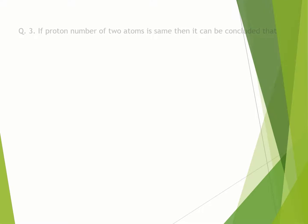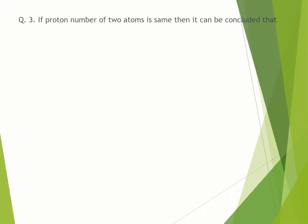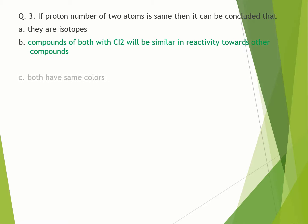Question number 3. If proton number of two atoms is same, then it can be concluded that: A. They are isotopes. B. Compounds of both with Cl2 will be similar in reactivity towards other compounds. C. Both have same colors. D. Both have same melting points. Correct option is B.